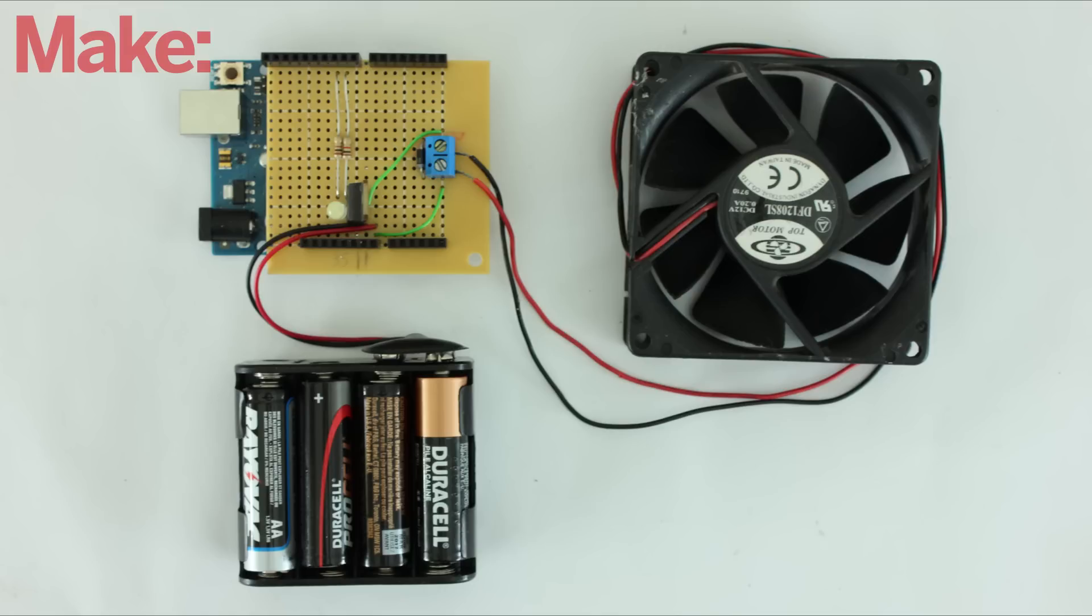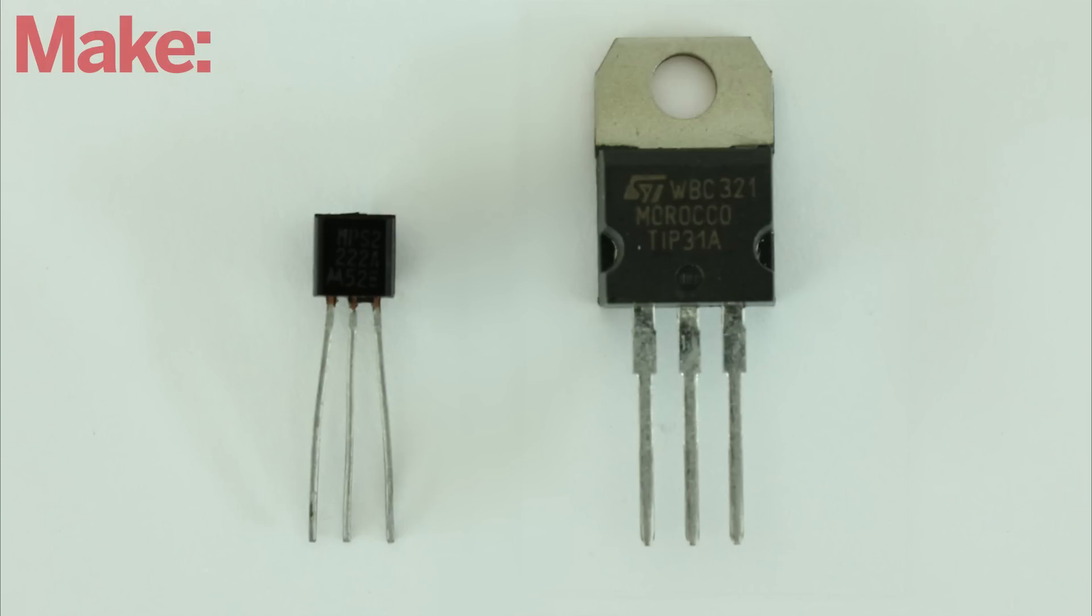Here, we're powering everything from the battery pack connected to the VN pin and ground. I also replaced the small signal transistor with a power transistor for a higher current capacity.